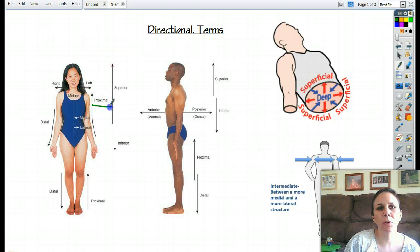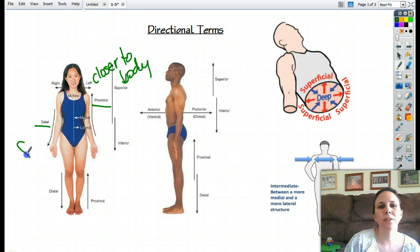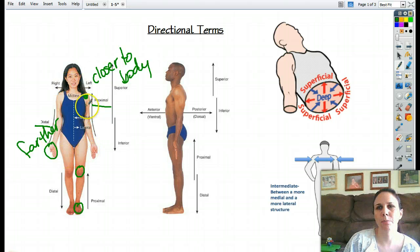Next one is proximal versus distal. Proximal just means closer to the body. And so distal means farther from the body. So her shoulder is proximal to her body, whereas her hand is distal to her body. Her feet are distal, her knees are proximal,